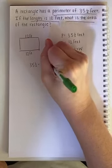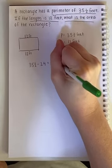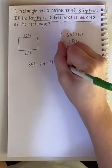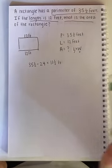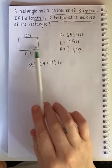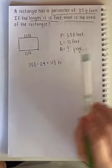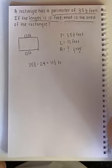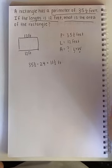Alright, when you subtracted you should have gotten 11 and a half. It actually would be feet. So that does not mean each side is 11 and a half feet. That means the two sides together are 11 and a half feet. So how could I find out what just one of those sides are?